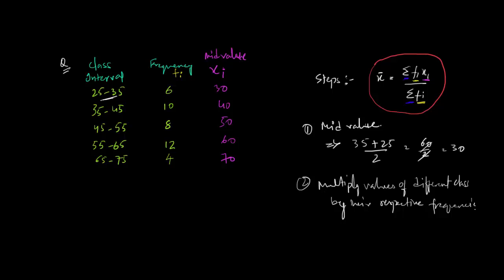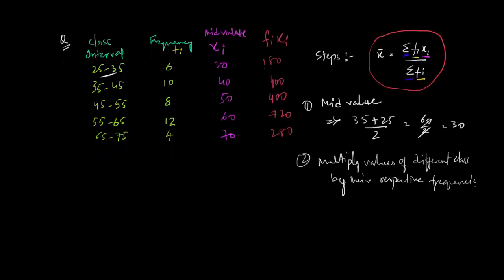Let me just choose a third color and here we will write it as fi times xi. You have to simply multiply these two terms. 6 into 30 is 180 and then 10 into 40 is 400 and 8 into 50 is again 400 and 12 into 60 is 720 and 4 into 70 is 280. Let me just make some space over here.